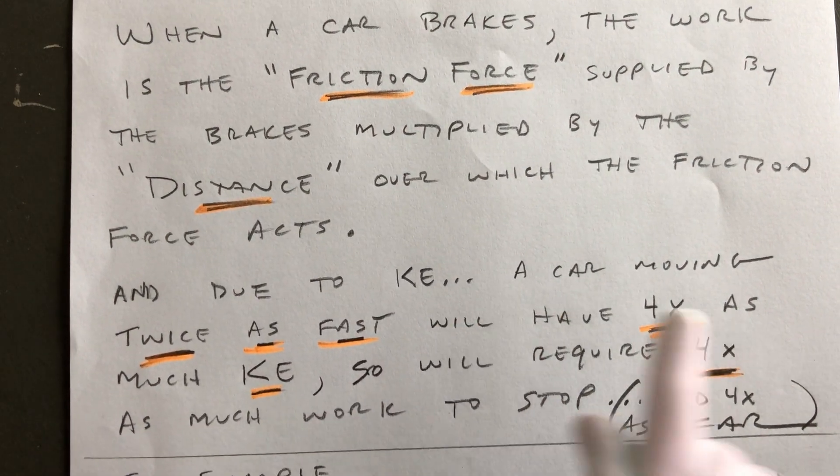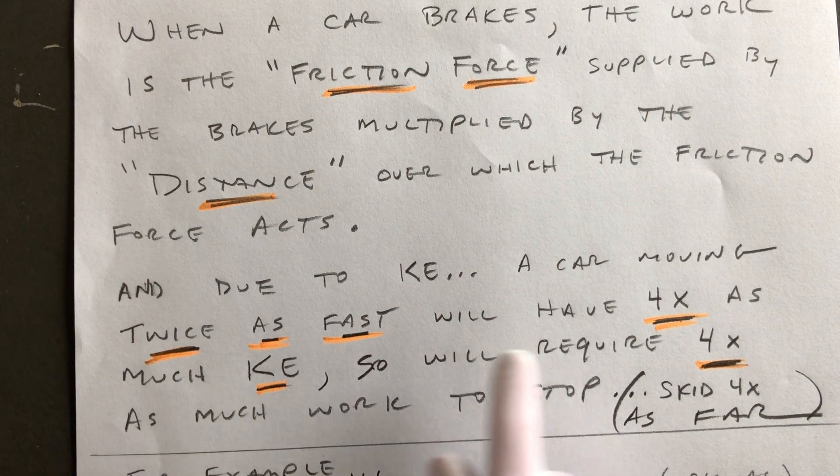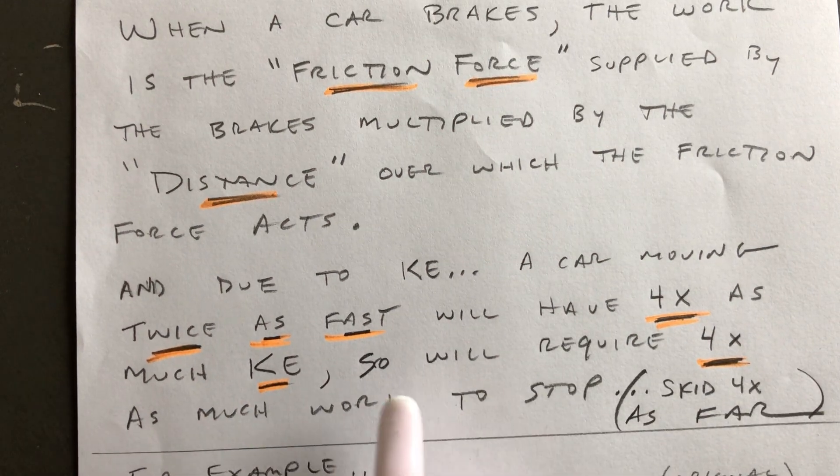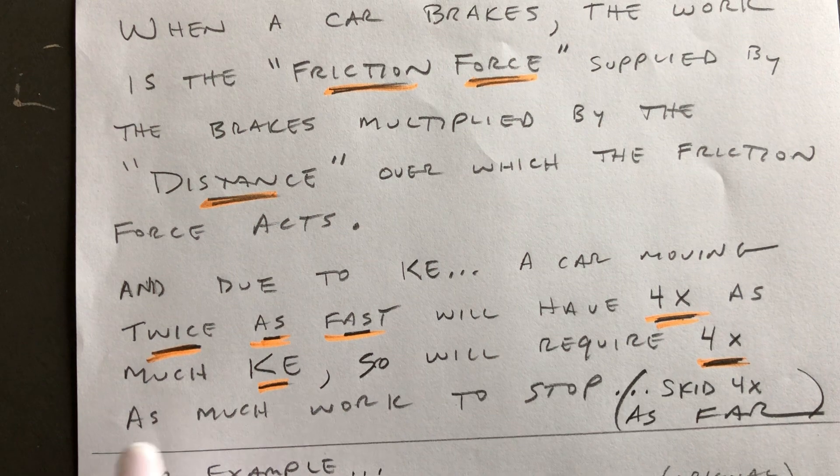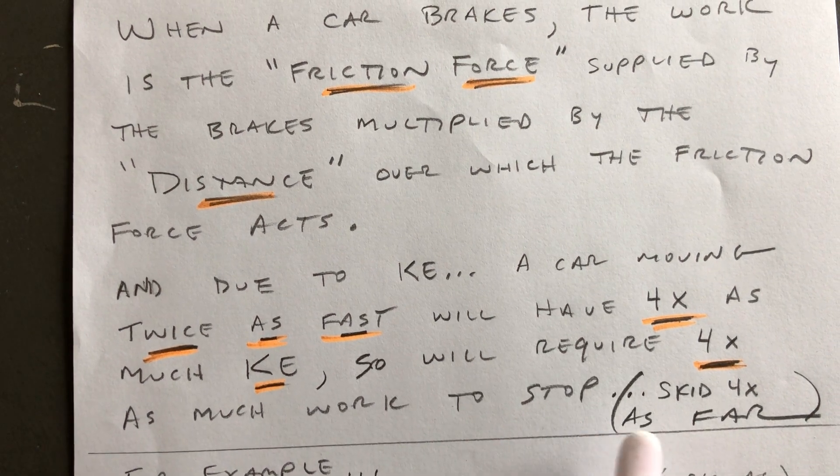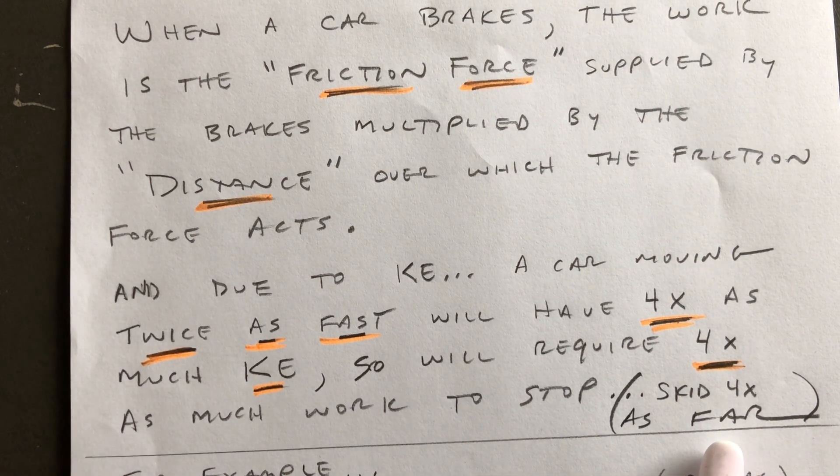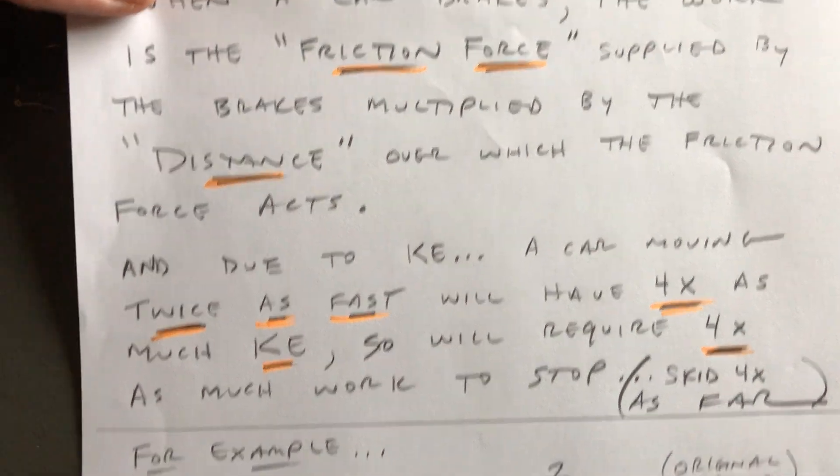And due to kinetic energy, a car moving twice as fast will have four times as much kinetic energy, so it's going to require four times as much work to stop it. It'll skid four times as far. Now as far as math goes, just to kind of show you what's going on here.